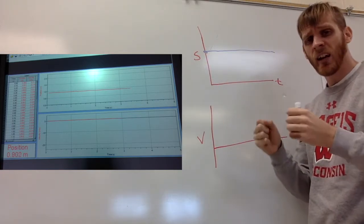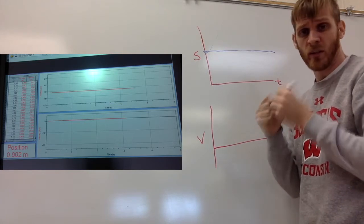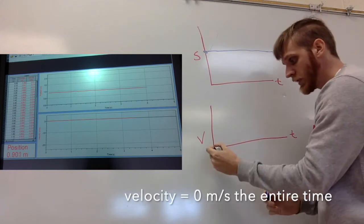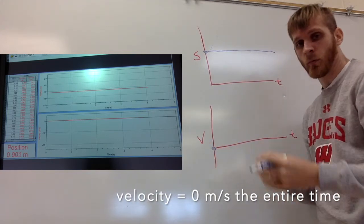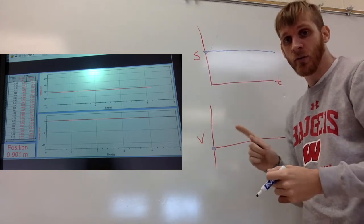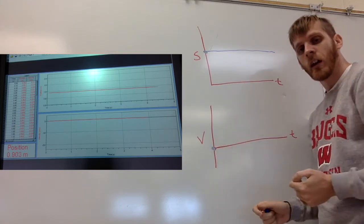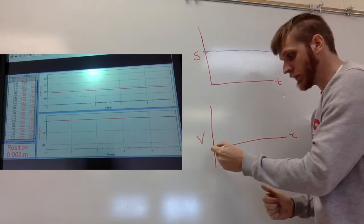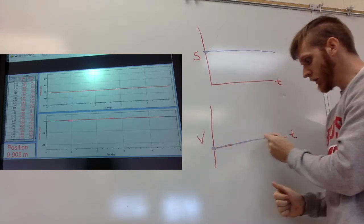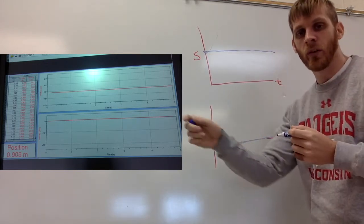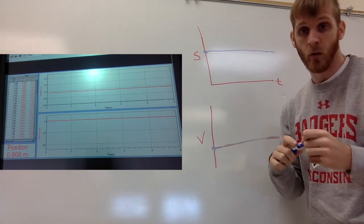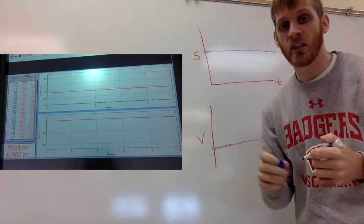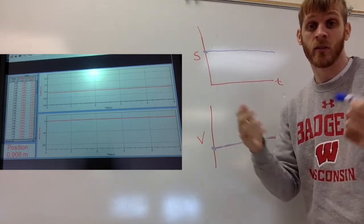His velocity, since his position or displacement was not changing, was always zero. So his velocity started at zero. If he were to start moving and pick up speed, his velocity would become positive. If he walked backwards, his velocity would become negative. But he didn't move at all, so his velocity just stayed at zero — right on that line. Both lines were just flat: one flat at some constant displacement value, and the velocity line flat at zero.